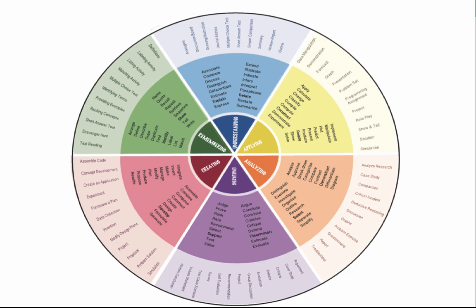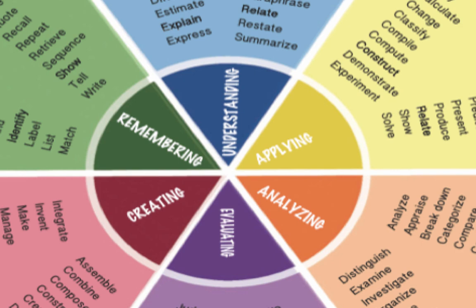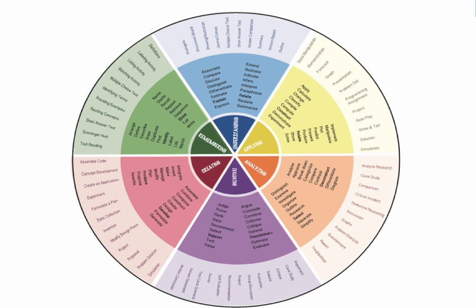Back to the wheel. We'll see that the wheel contains six levels of learning or cognitive domains in the center, suggested measurable action verbs for each domain, and a few examples of learning activities and assessments that fall within each domain. You should use your Bloom's Wheel to help you select verbs, activities, and assessments for your course.